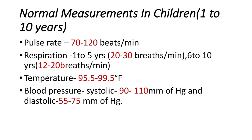In the age group of 1 to 10 years, the normal measurements of vital signs are: the pulse rate is between 70 to 120 beats per minute. The normal respiration at age group 1 to 5 years is 20 to 30 breaths per minute.